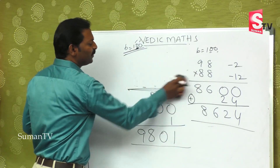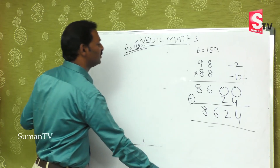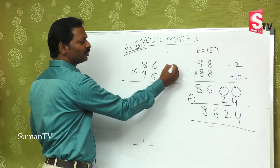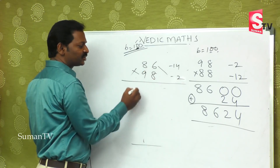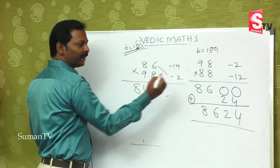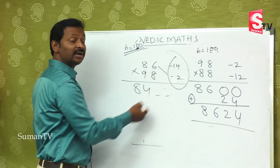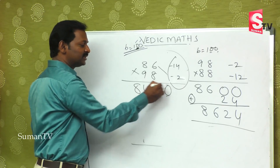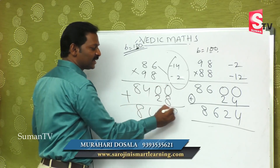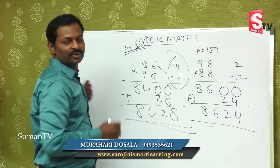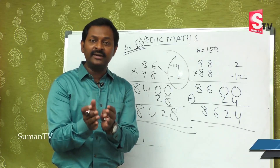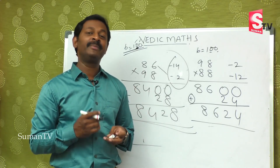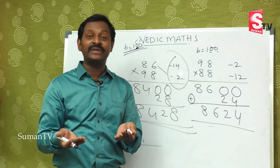Any number we can do. For example, 86 multiplied by 98. The deficit for 86 is minus 14, and for 98 it is minus 2. Cross-subtract: 86 minus 2 is 84 — two digit places. 14 times 2 is 28 — minus into minus is plus. So you put 28 directly. The answer is 8428. Today we closed numbers close to 10 and close to 100. In the coming episodes, we will cover more such methods.